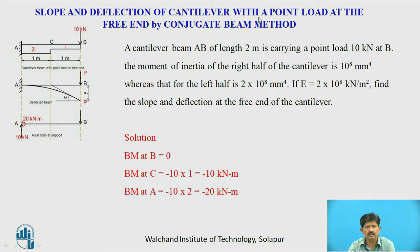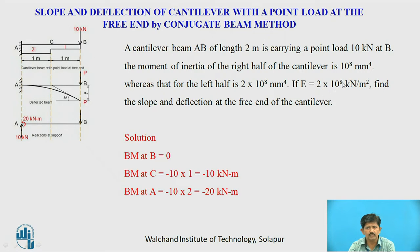Now we will find the slope and deflection of a cantilever having a point load at the free end for a beam with a different cross-section. A cantilever beam AB of length 2 meters carries a point load of 10 kN at B (free end). The moment of inertia of the right half (BC) is I = 10⁸ mm⁴, and for the left half (AC) it is 2I = 2×10⁸ mm⁴. E = 2×10⁸ kN/m². We need to find the slope θ and deflection y at the free end.